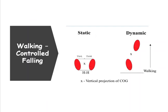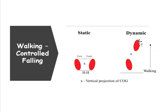Another thing to think about when we're talking about balance is that walking is controlled falling. When statically standing, our base of support sits right in between our feet. When we are walking — especially in single stance — our center of gravity leaves the base of support. Then the subsequent heel strike keeps your balance. So walking is a series of controlled falling.